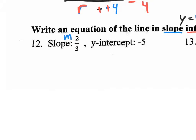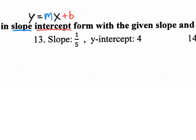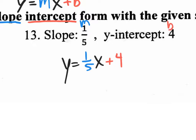You're going to love these problems because they give you the m and they give you the b. What is the m here? The m is two-thirds. What is the b? The b is negative five. So let's write: y equals two-thirds x minus 5. If you put plus negative five that would be okay, but the multiple choice answer will be written as minus five. These are like easy points — free money right here.